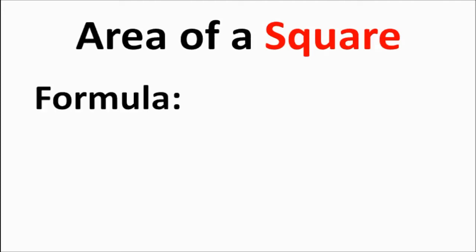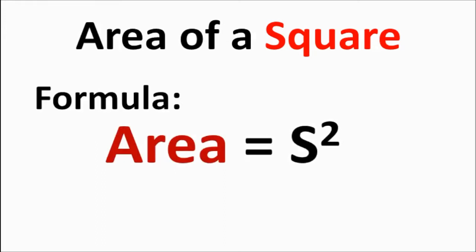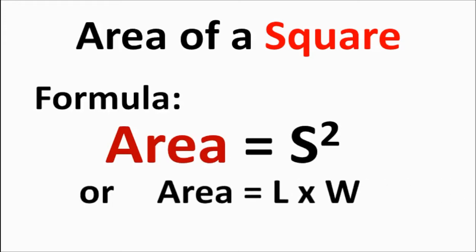In finding the area of the square, we will use the formula Area = s². Or also we can use Area = length times width.